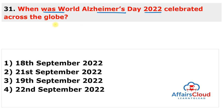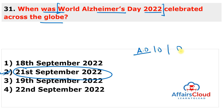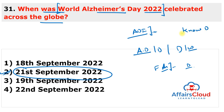World Alzheimer's Day 2022 was observed on 21st September 2022 to raise awareness about Alzheimer's disease, dementia, and the importance of timely diagnosis. The day highlights the need to fight stigma surrounding Alzheimer's. The World Alzheimer's Month is an international campaign by Alzheimer's Disease International held every September. The theme for World Alzheimer's Month in September 2022 was 'Know Dementia, Know Alzheimer's,' continuing from the 2021 campaign.